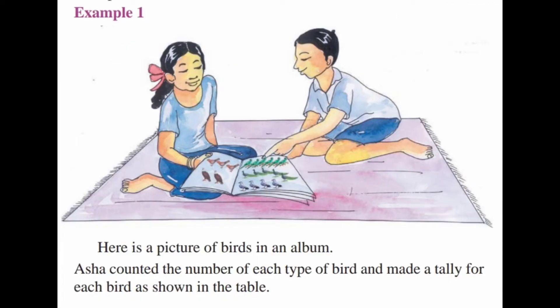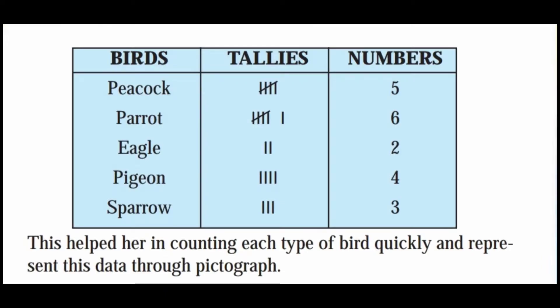Example 1: Here is a picture of birds in an album. Asha counted the number of each type of bird and made a tally for each bird as shown in the table. The number of birds: Peacock 5, Parrot 6, Eagle 2, Pigeon 4, Sparrow 3. This helped her in counting each type of bird quickly and represent this data through a pictograph.